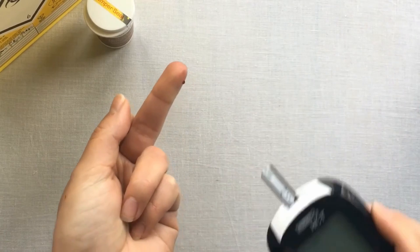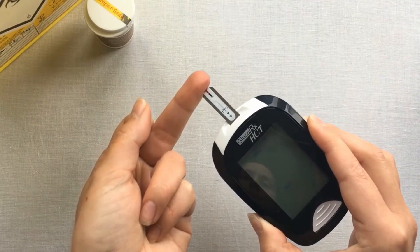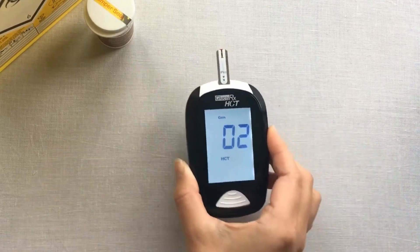Hold the meter and bring the strip to the blood droplet so it touches. It automatically sucks up the blood into the strip.